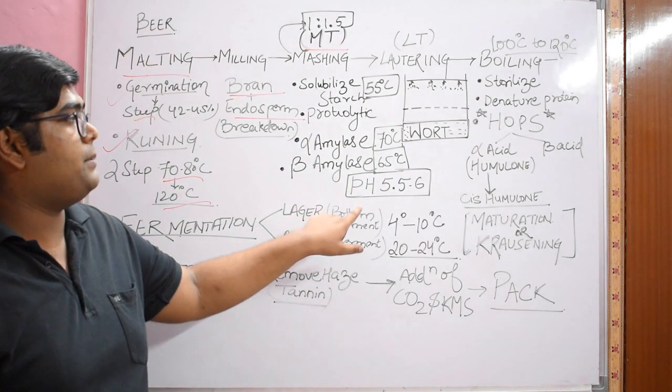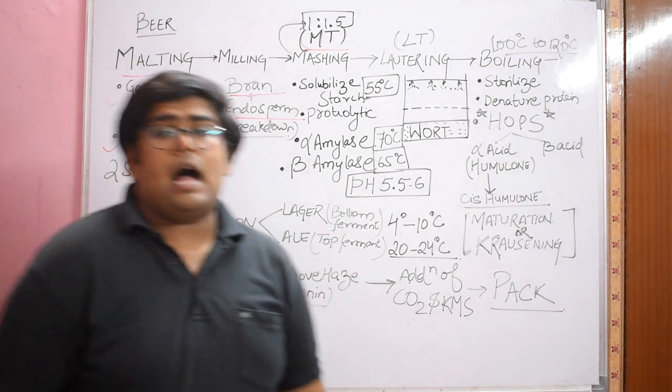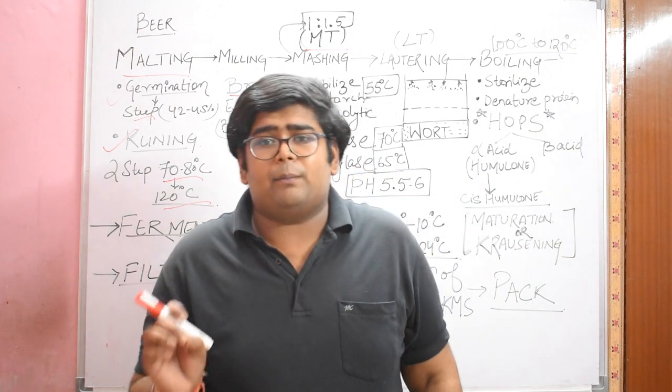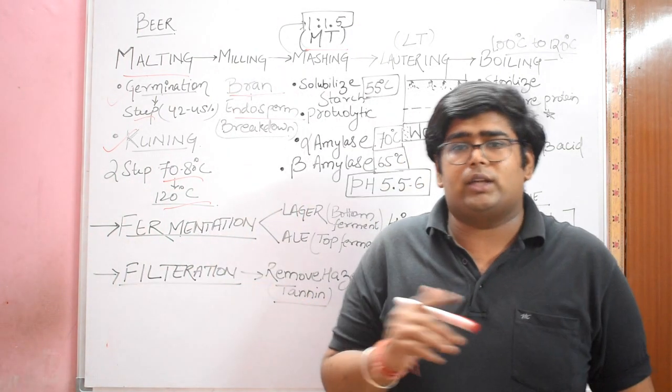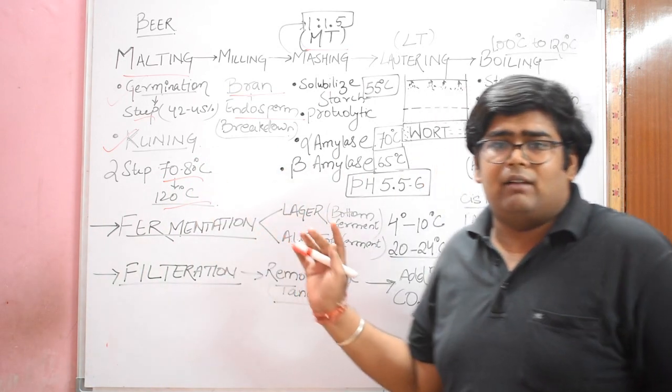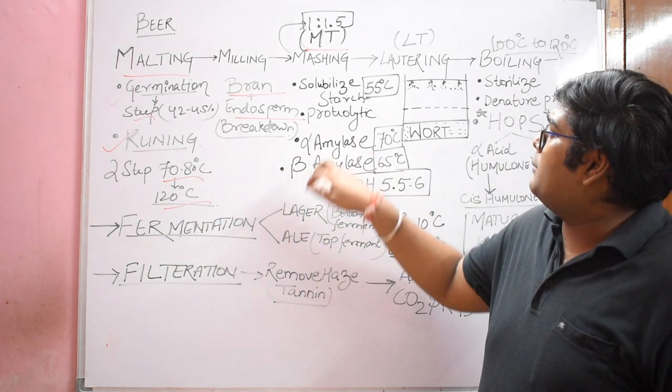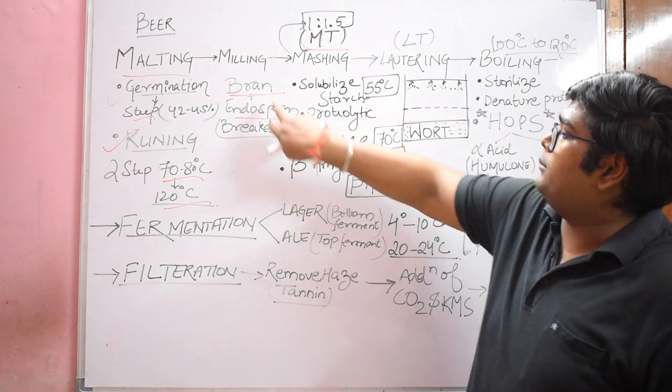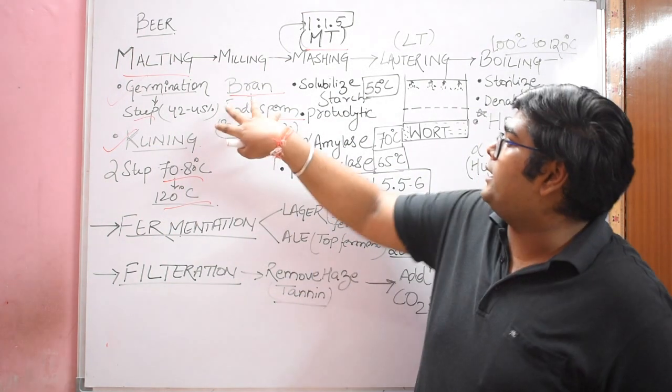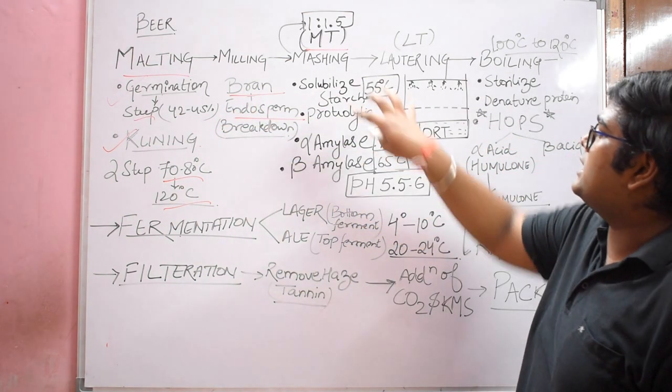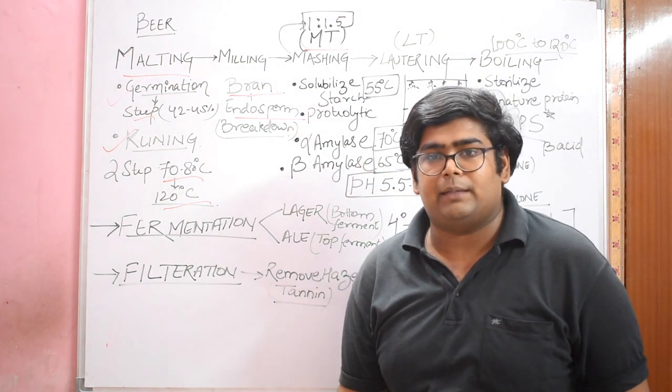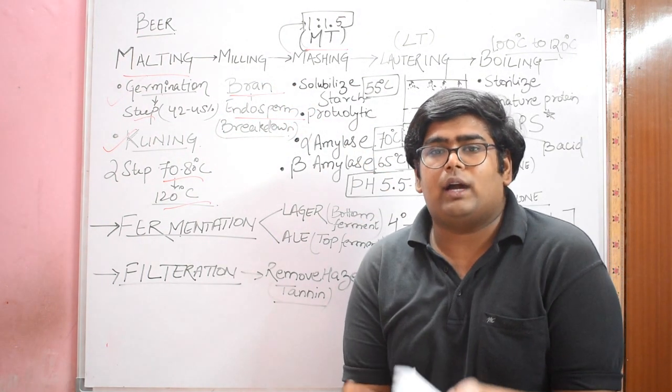When your mashing has been completed - guys, it is a very simple process, beer brewing, people complicate it. What you have added is cereal and water. You've heated it, the enzymes have broken down the starch into simple fermentable sugars.